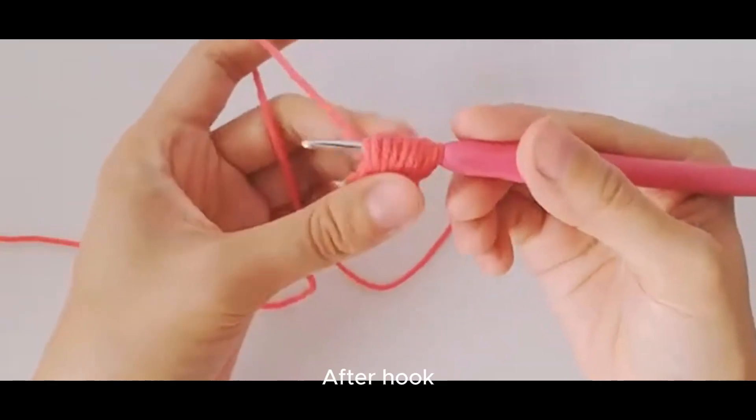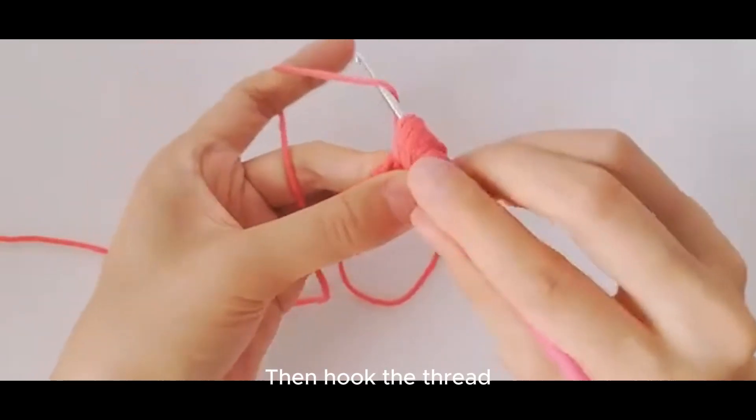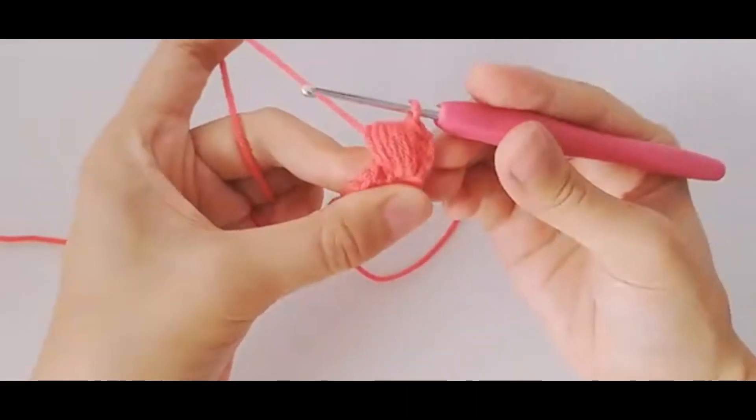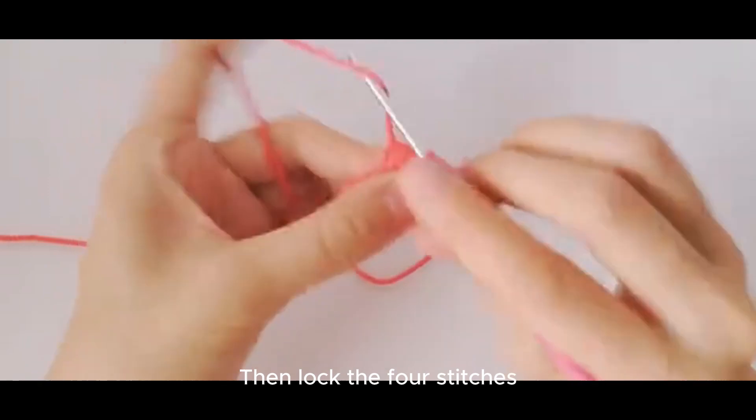After hook, then hook the thread. Pull the wire out at once. Then lock the four stitches.